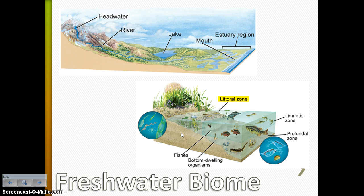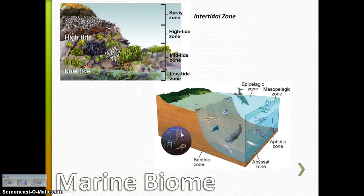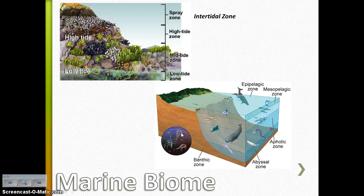There's some freshwater biome — the different zones of the lakes and ponds. Here are the different zones of our marine ecosystems. The most biodiverse zones, whether freshwater or marine, are going to be the zones that are shallow. The reason for that is because there's sunlight there. So the more sunlight, the more producers you can have; the more producers you can have, the more consumers you can support.